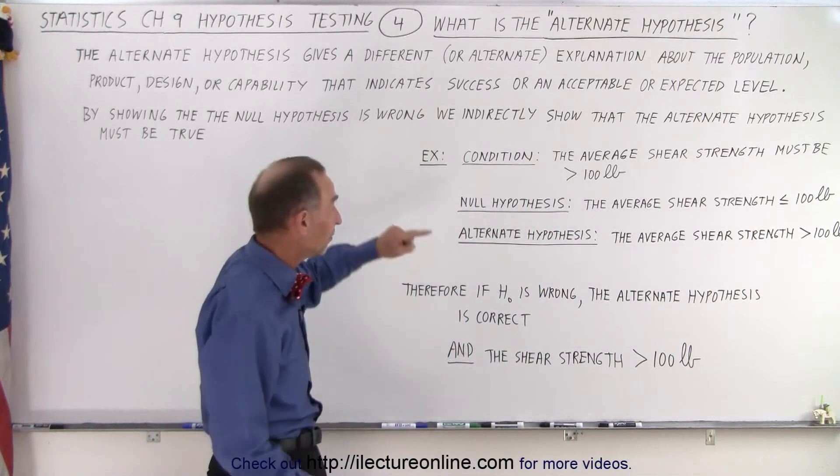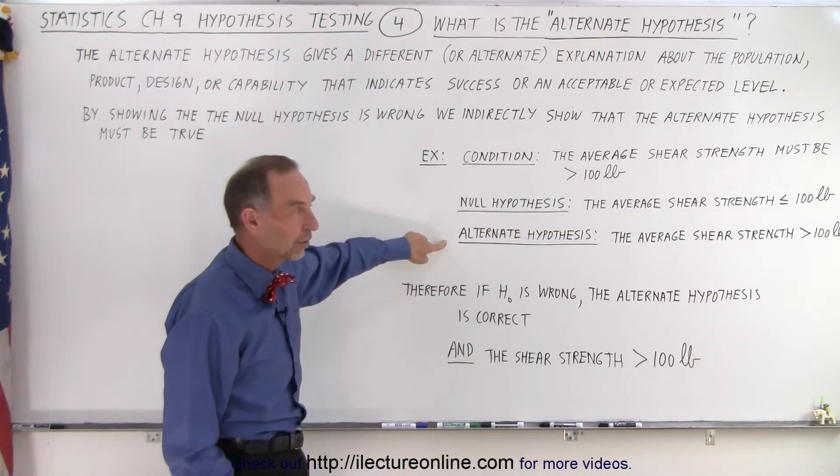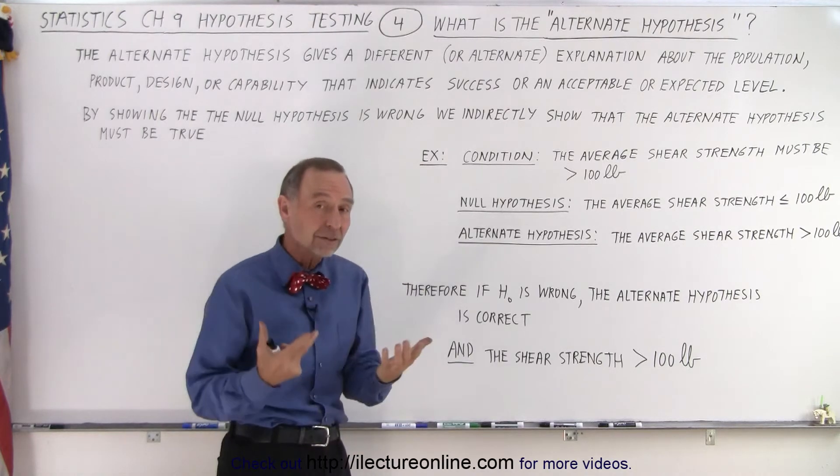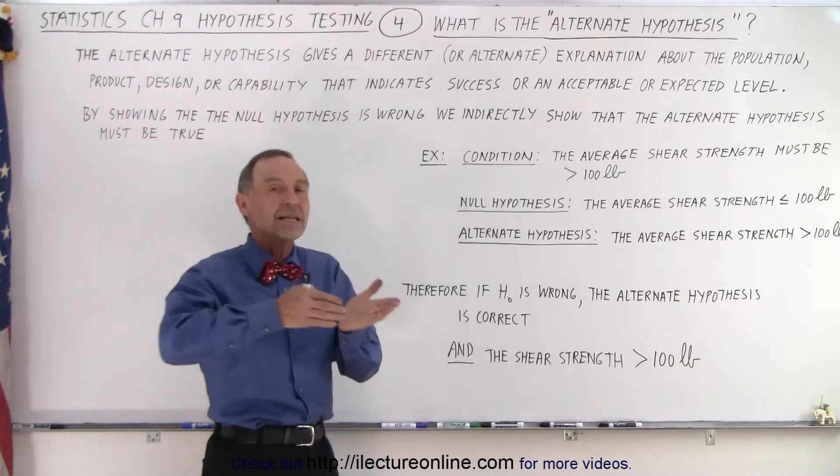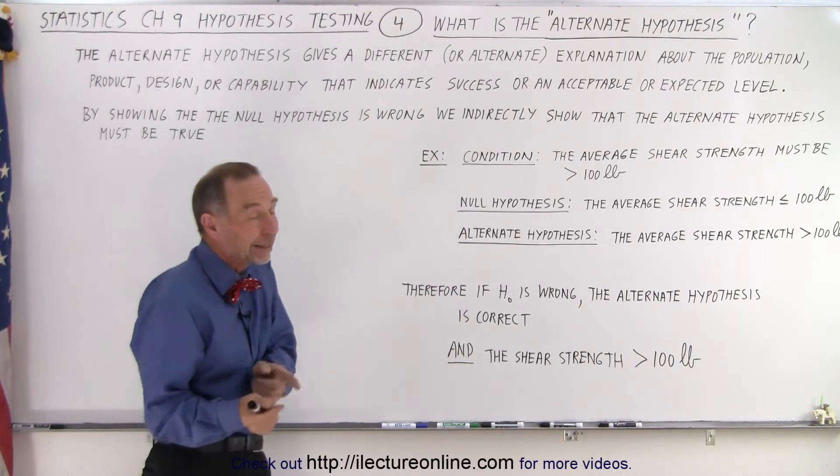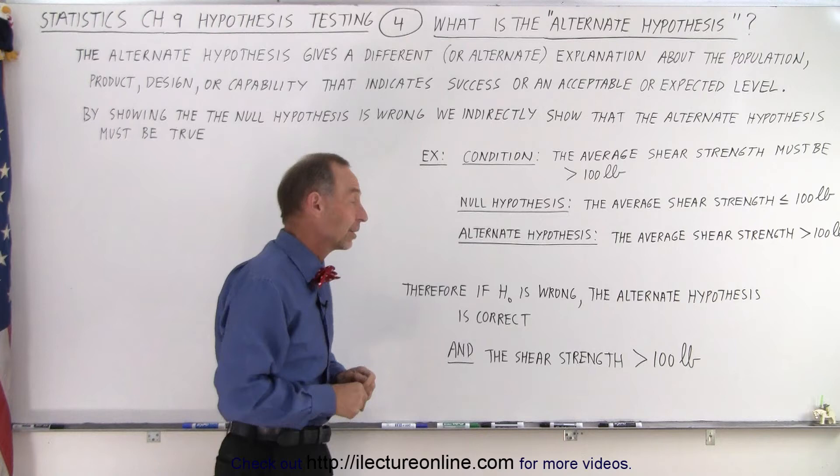So that means that if this is wrong, this must be correct. So if we test for the hypothesis and we can show that the null hypothesis is wrong, that means that the alternate hypothesis must therefore be correct and therefore we meet the correct conditions.